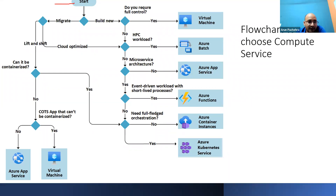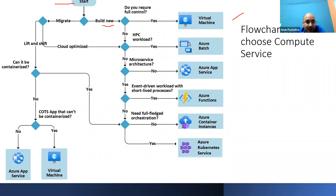Let's start from the beginning. Suppose we are building a new environment. The question is: do we need full control over our environment — like virtual machines where we run our workloads? If yes, then VM is the right choice. If not, we proceed toward PaaS services. IaaS is all about control; PaaS is all about focusing on your business with less admin overhead, though there is less control as a result.